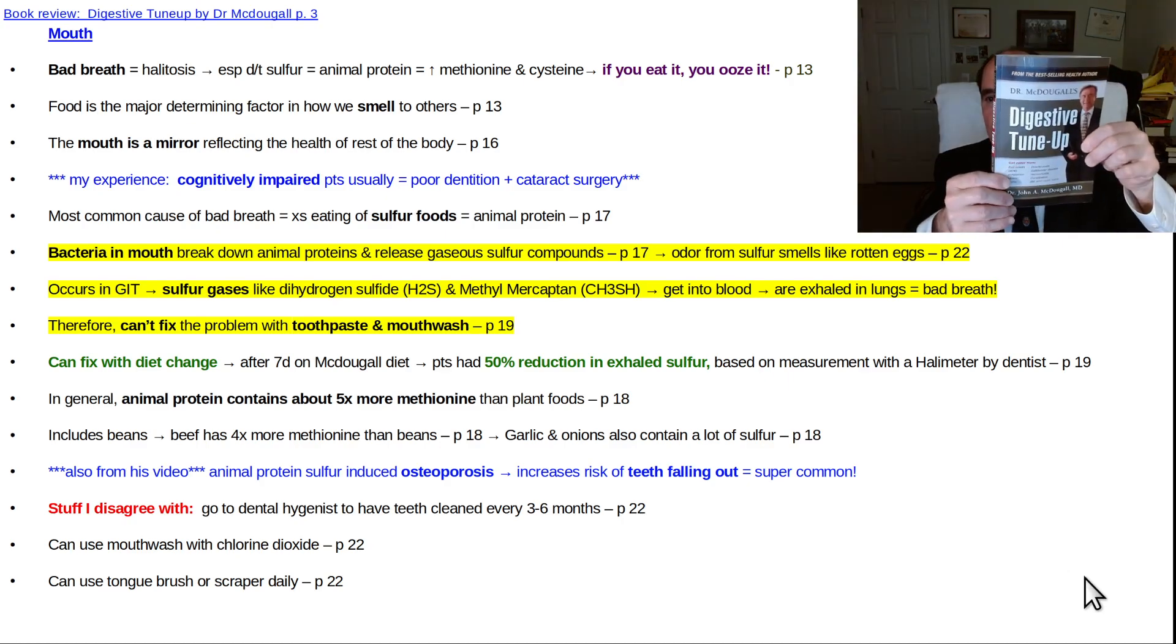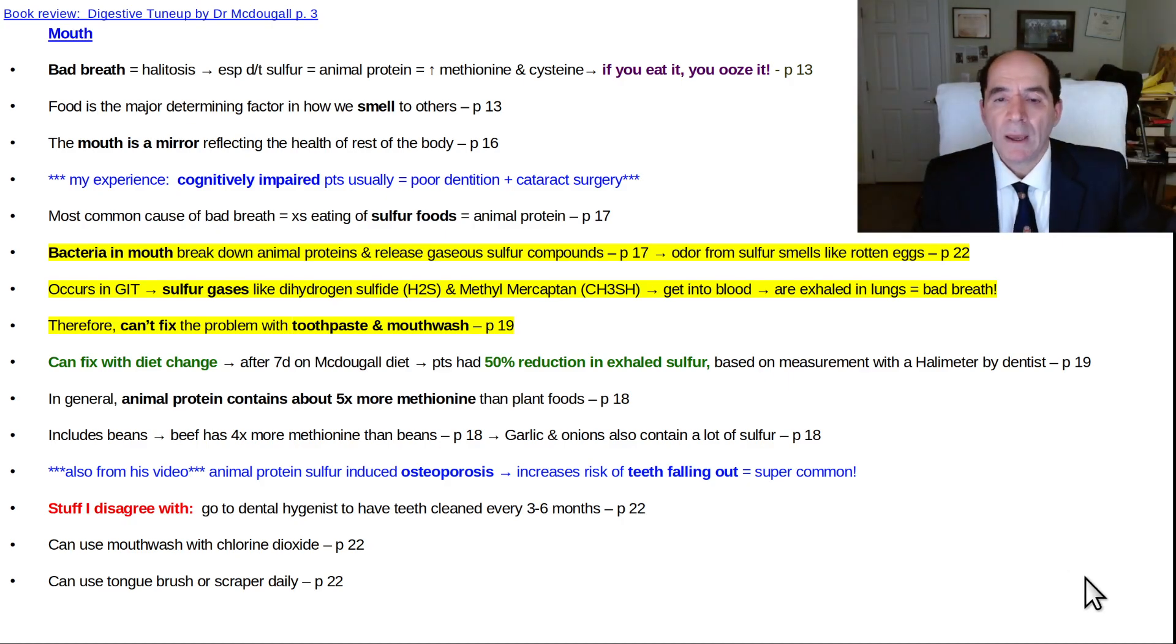This is part two of the book review on Digestive Tune-Up by Dr. John McDougall. He talks about bad breath, halitosis, and says it's by far most commonly due to animal protein. Animal protein has a lot more methionine and cysteine, the sulfur-containing amino acids. He's got a good quote: if you eat it, you ooze it. It comes out of you, you smell like what you eat.